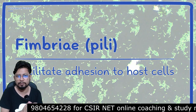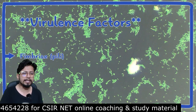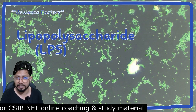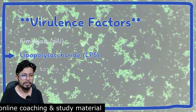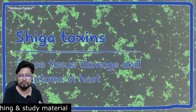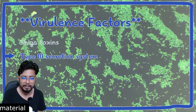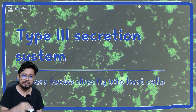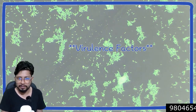E. coli can interact with the epithelial cells of the gastrointestinal tract with the help of fimbriae. The next important feature is the lipopolysaccharide or LPS layer — E. coli releases endotoxin that triggers an immune response in our body. It also releases Shiga toxins, which cause tissue damage and symptoms in the host. Additionally, it has a type 3 secretion system that delivers toxins directly into the host cell. These are the virulence factors.